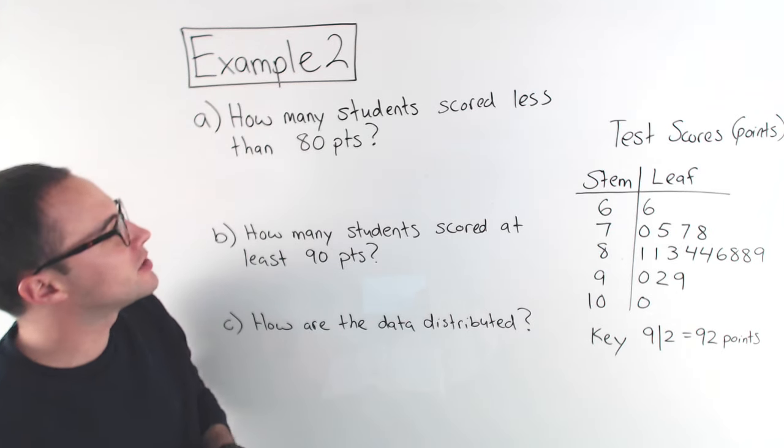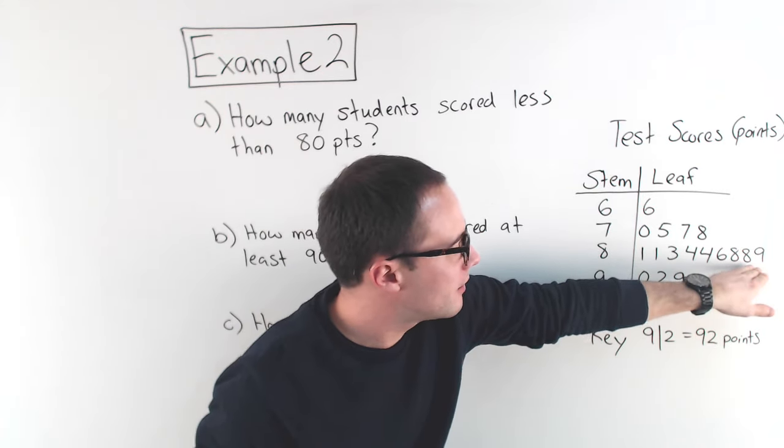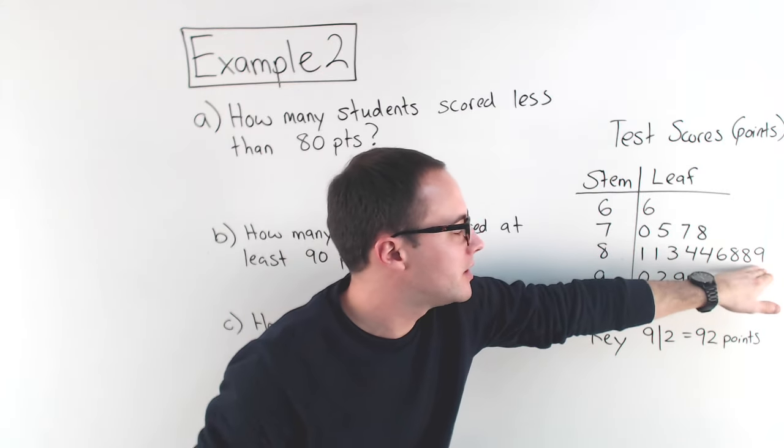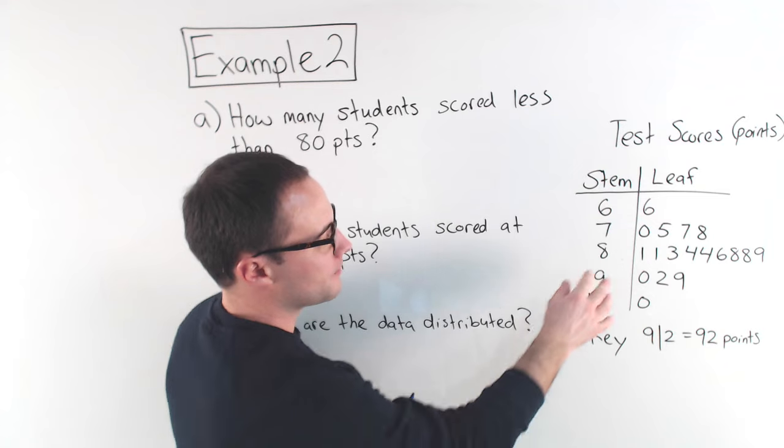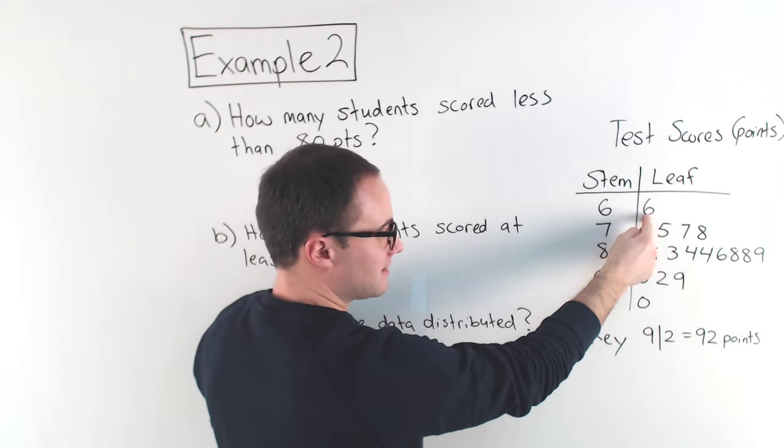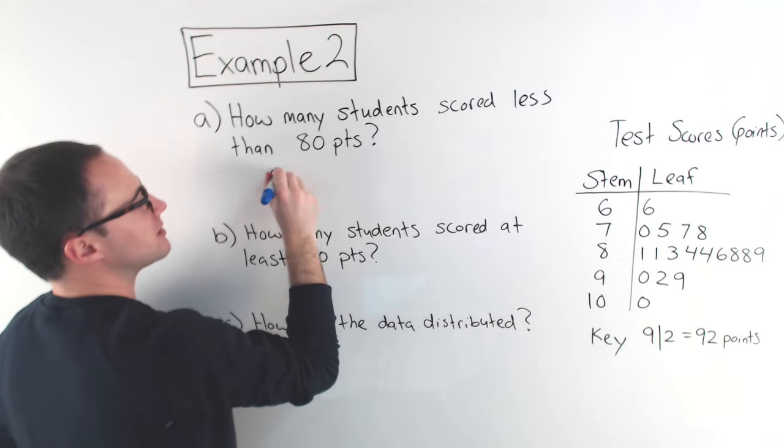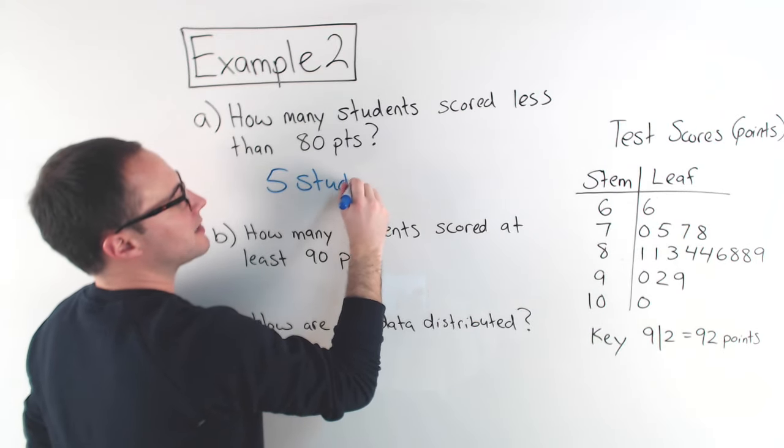Let's look here. First one: How many students scored less than 80 points? Well, all of these here are in the 80 point range. Less than that, well, that would be 78, 77, 75, 70, 66. So, we have 1, 2, 3, 4, 5. 5 students scored less than 80 points.